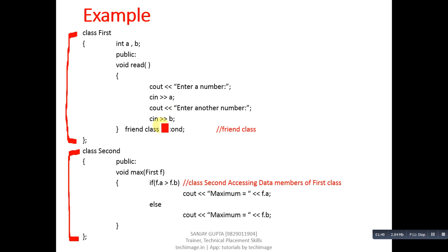After completion of read definition, a declaration is there which says friend class Second. This declaration is indicating that Second class is friend of First class. It means Second class members can access all the members of First class.